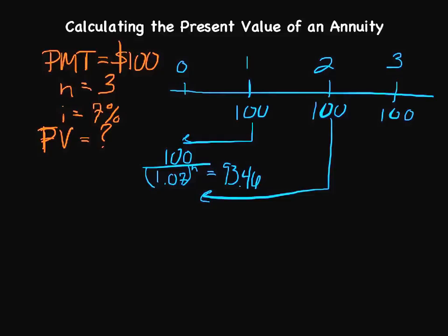In the second period, it's going to be 100 divided by 1.07 to the second power. That'll look a little different obviously. If you work that problem out, what you end up with is $87.34.